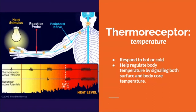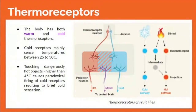The thermoreceptor detects temperature, responding to hot or cold, and helps regulate body temperature by signaling both surface and body core temperature. We have cold receptors that mainly sense temperatures between 25 to 30 degrees Celsius. Touching dangerously hot objects higher than 45 degrees Celsius causes paradoxical firing of cold receptors, resulting in a brief cold sensation.